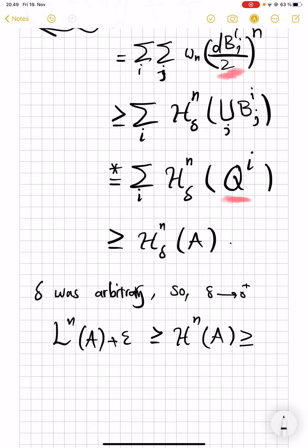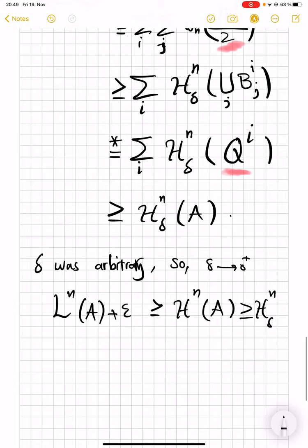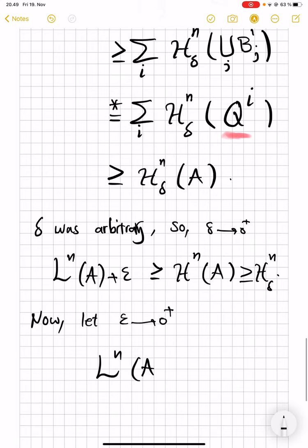And this is bigger than, remember, every H^n_δ, including infinity. And then epsilon was arbitrary. Now, let epsilon go to zero. And this completes the proof that L^n of A is bigger than or equal to H^n of A.